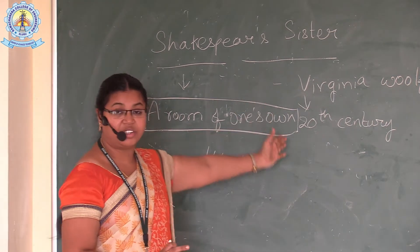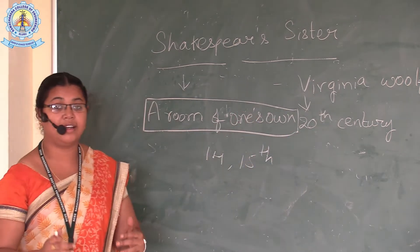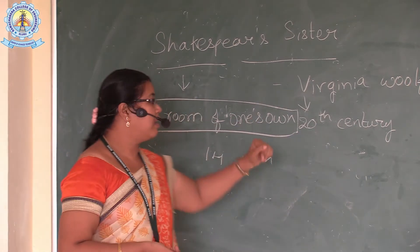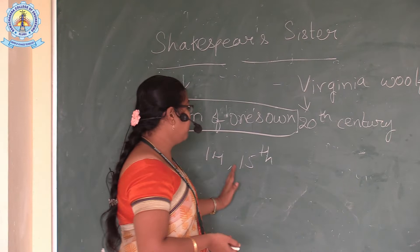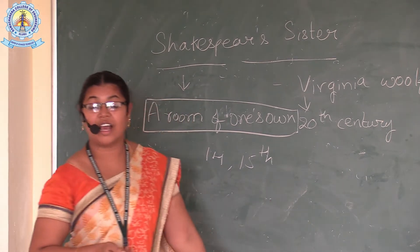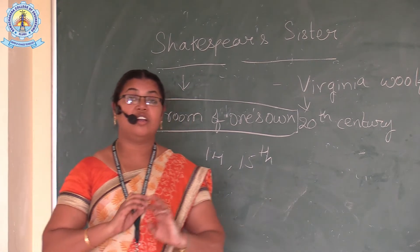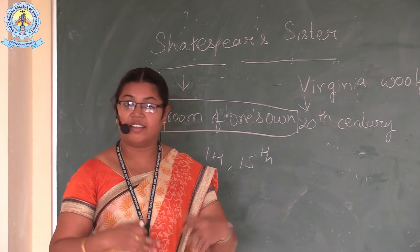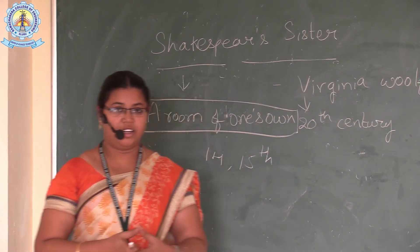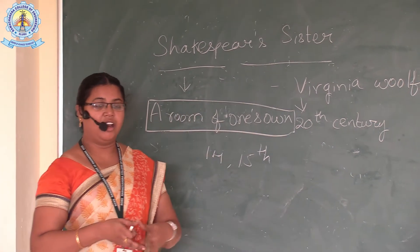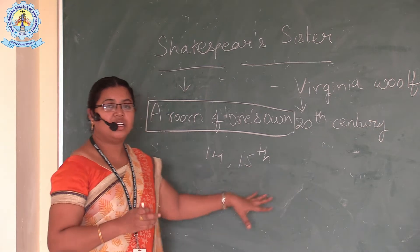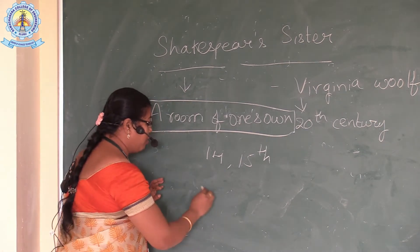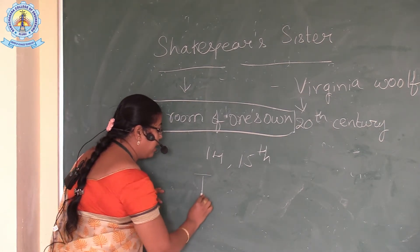As a literary writer, she started searching for women writers who belonged to the 14th and 15th centuries. When she searched in the library, she found no women writers, and she got disappointed. Finally, she took a book by Trevelyan.